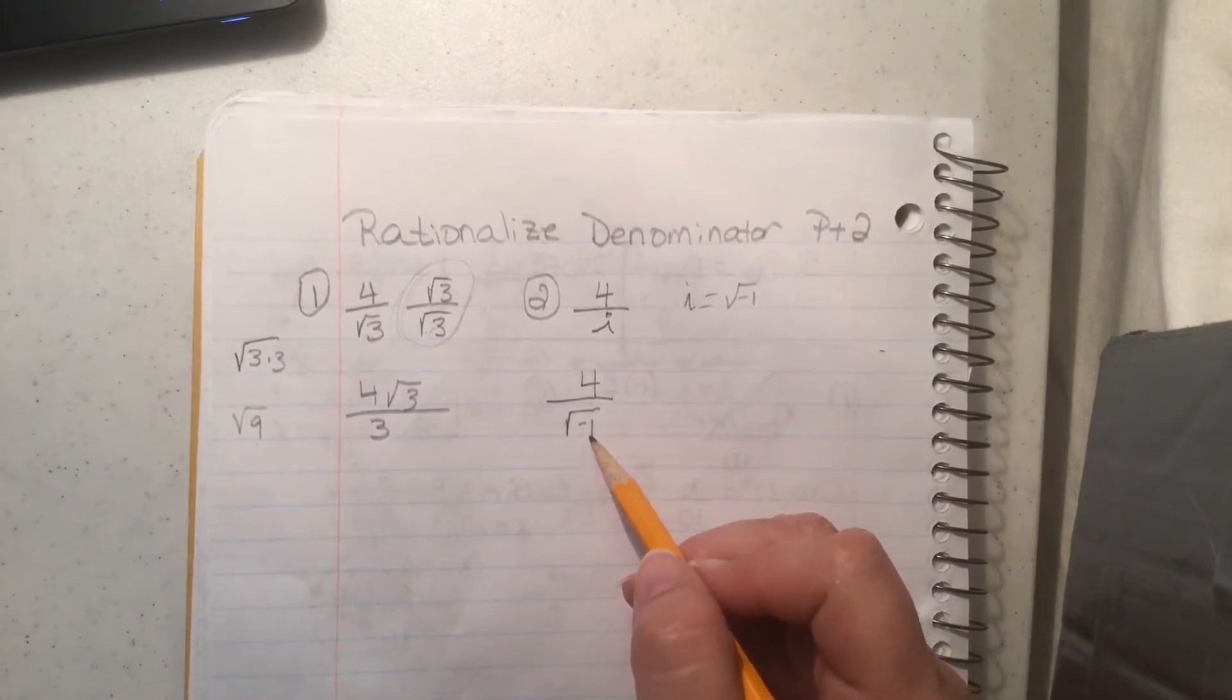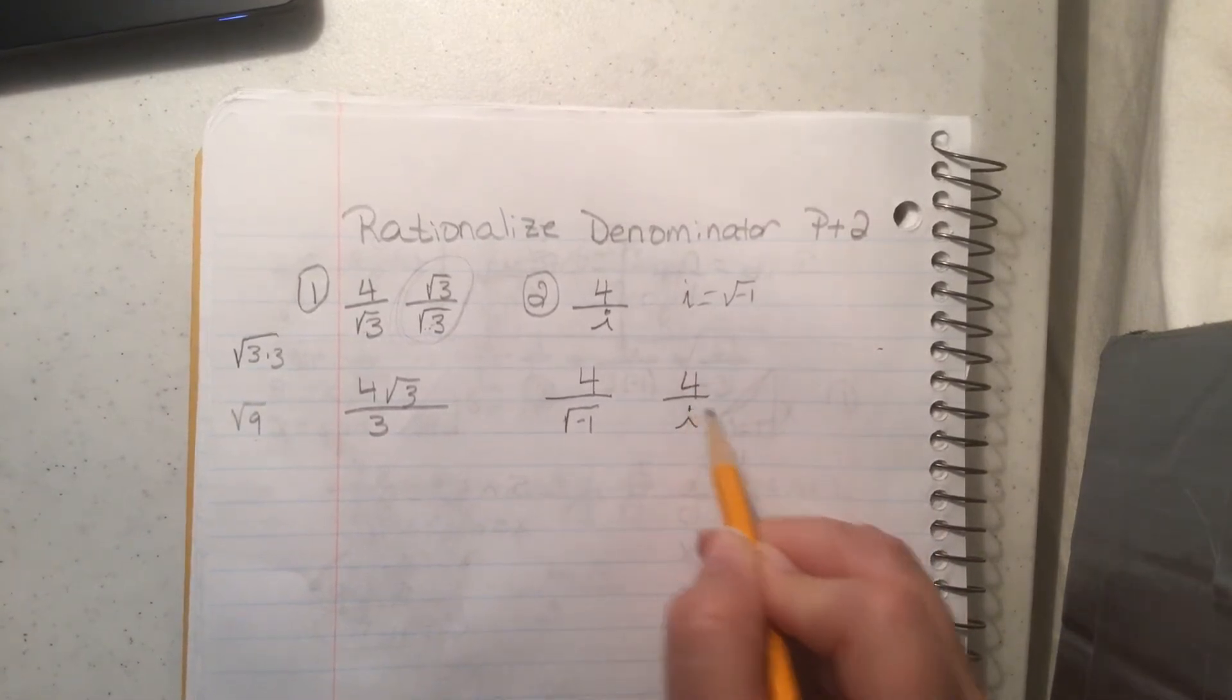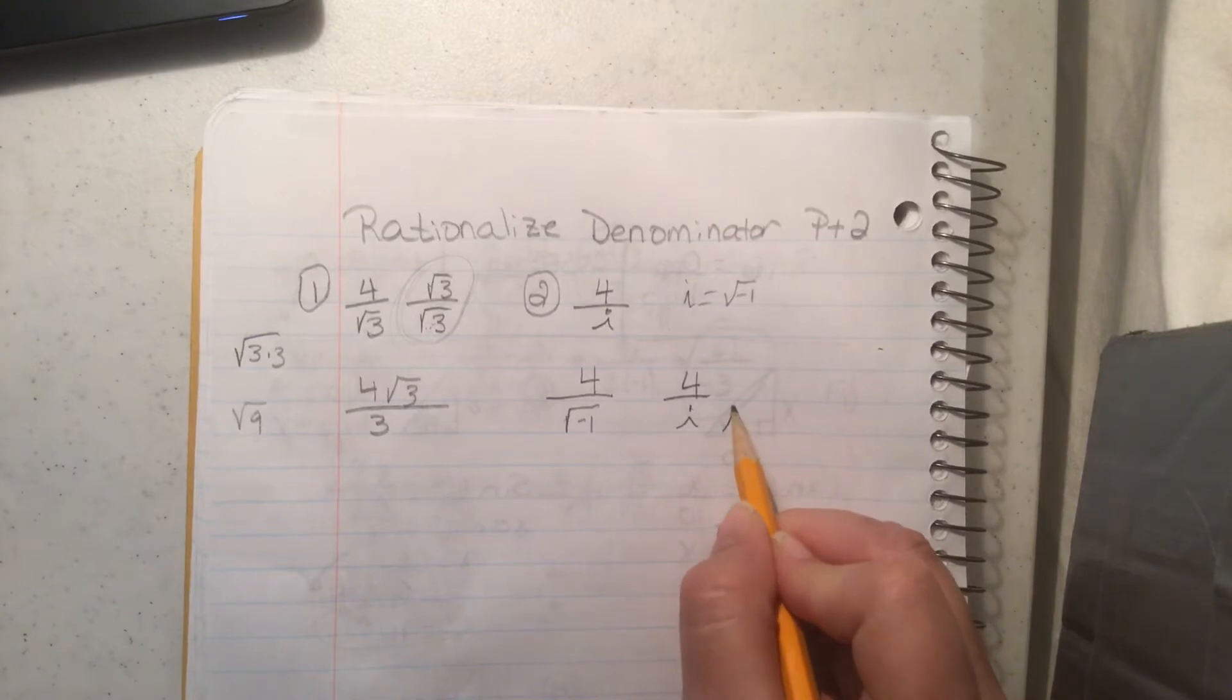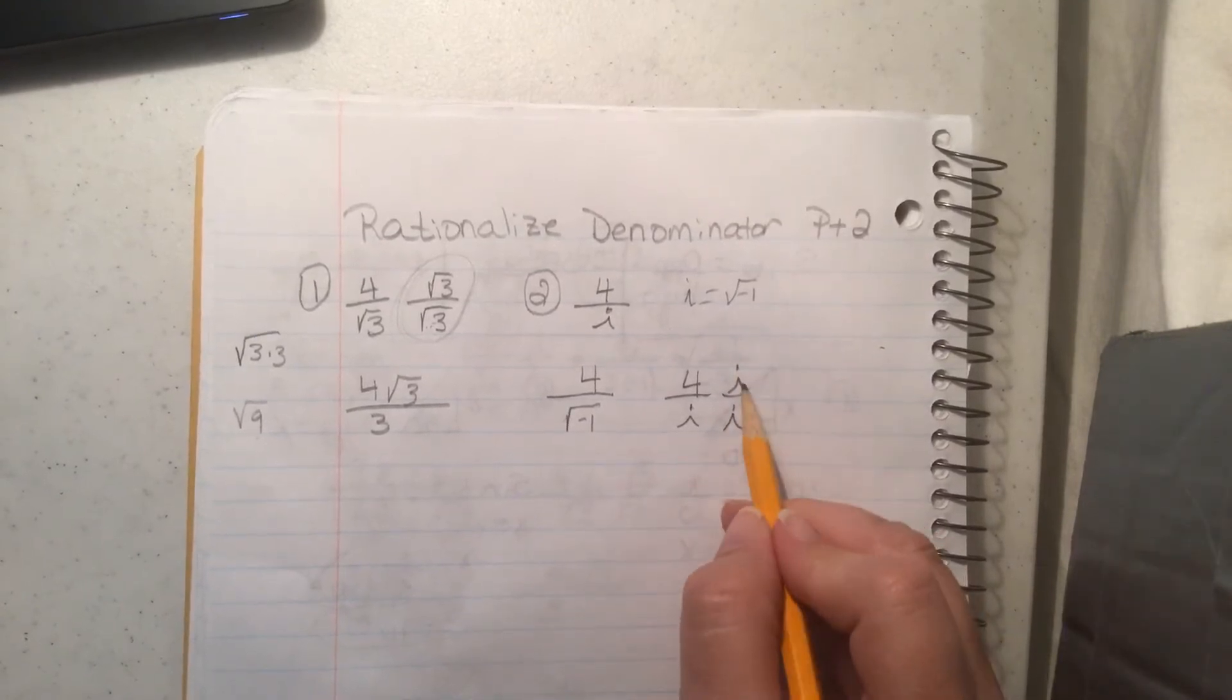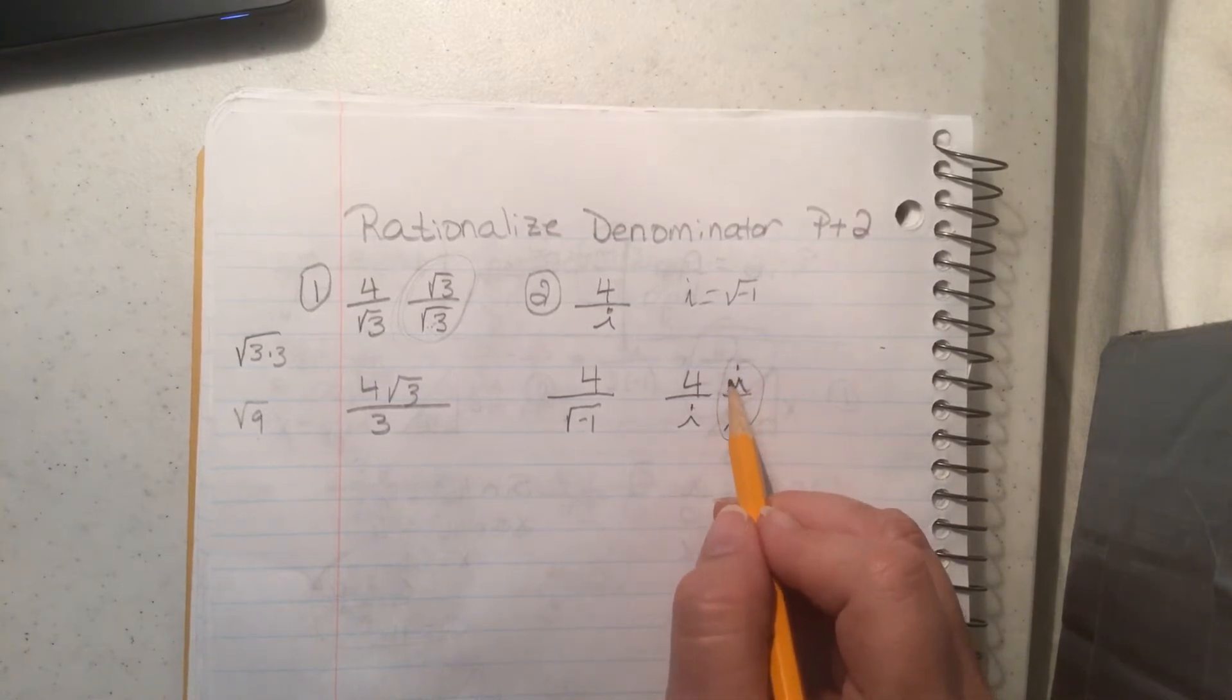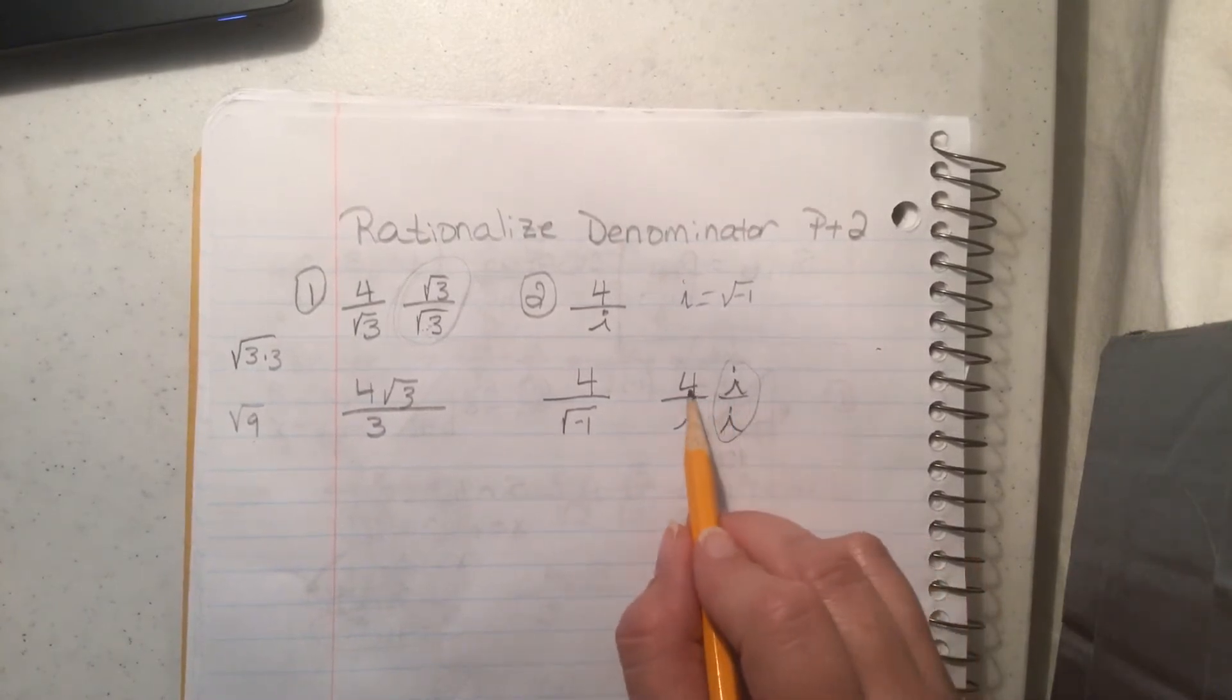Well that's why we can't have an i on the bottom because it's a radical. Can't have a radical under there. So what you're going to do is you're just going to multiply by the radical, which is going to be just i. Alright, remember i over i is the same thing as 1, so I can multiply a fraction by 1 all day long and still get the fraction. Just going to look a little different.